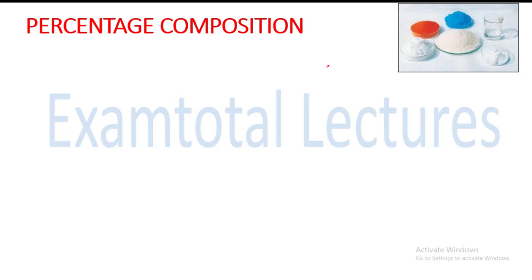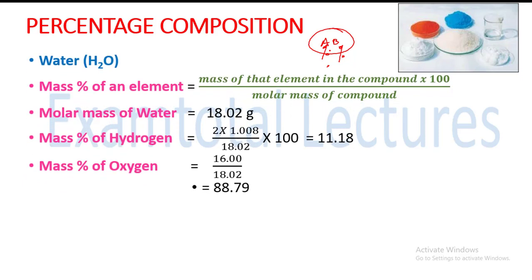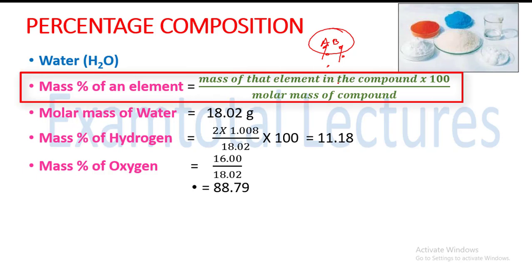For example, if you have a compound with elements A and B, these are different elements. So the percentage of A and the percentage of B will be present in a particular compound. The main formula is: the mass percentage of an element equals the mass of that element in the compound multiplied by 100, divided by the molar mass of the compound.